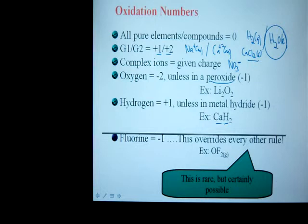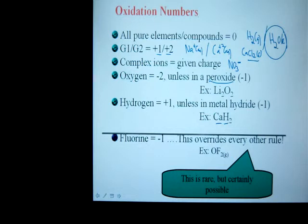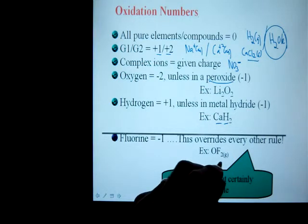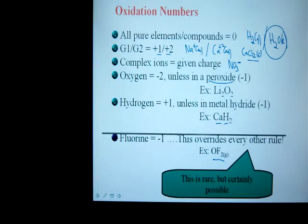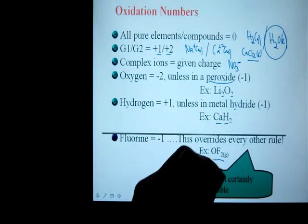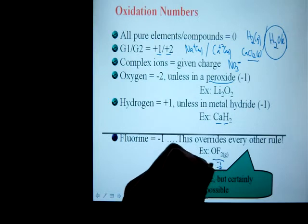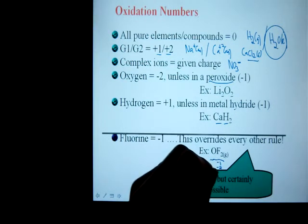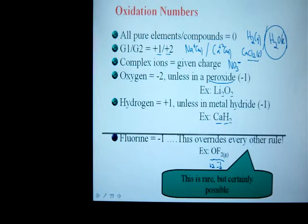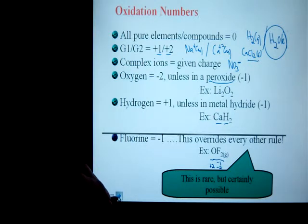Another rule which kind of overrides everything else is fluorine. If you have fluorine in a compound, it will always be negative one, no matter what. So for instance, you would expect oxygen to be negative two if it's in a compound, but it's not because fluorine is there. So fluorine is negative one — there are two of them for negative two — therefore oxygen would actually be plus two. Next slide, we'll work out some examples.